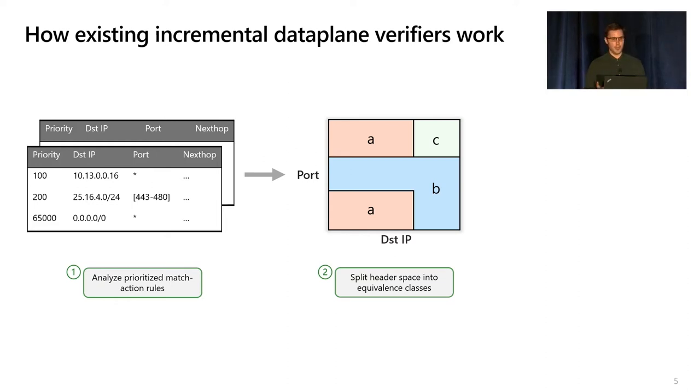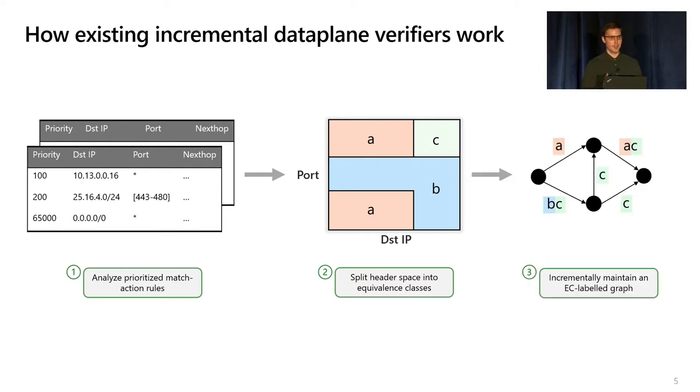For example, a packet with two fields, a port and a destination IP, can be viewed as forming a two-dimensional rectangle. Finally, they incrementally maintain an edge labeled graph where each edge is annotated with the equivalence classes that would be forwarded over that edge. At this point, you can check properties like reachability by just running graph algorithms like breadth-first search on this graph.